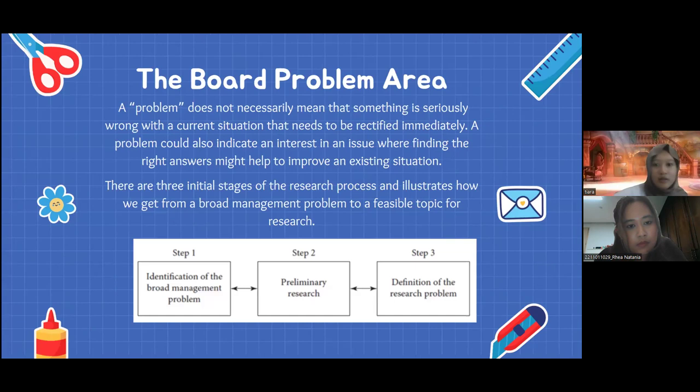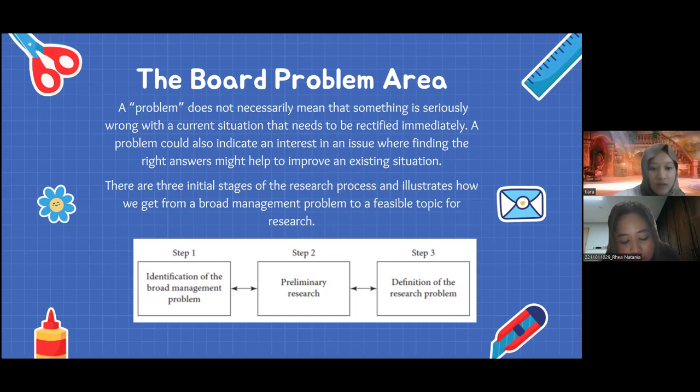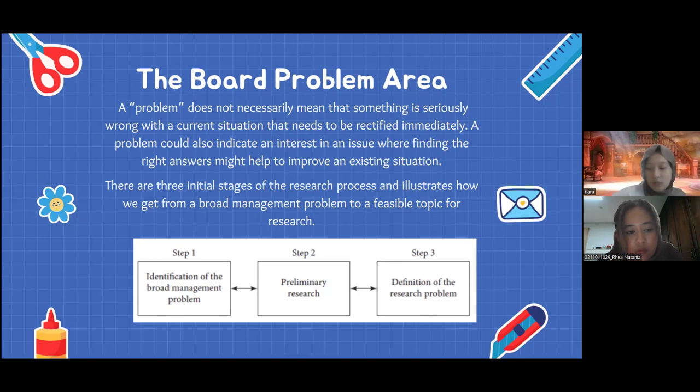The first topic is the broad problem area. A problem does not necessarily mean that something is seriously wrong with the current situation that needs to be rectified immediately. A problem could also indicate an interest in an issue where finding the right answer might help to improve an existing situation. There are three initial stages of the research process illustrating how we get from a broad management problem to a viable topic for research: step one is identification of the broad management problem, step two is preliminary research, and step three is definition of the research problem.